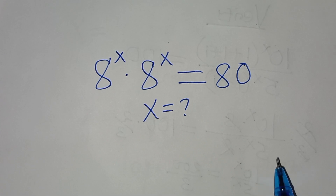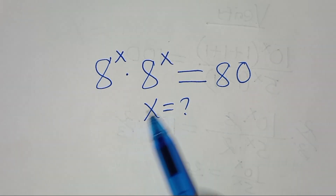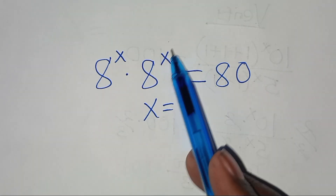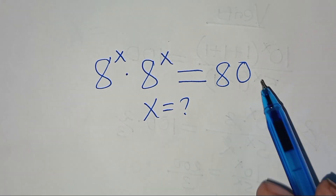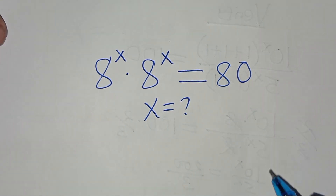Hello everyone, you're welcome to solve this nice exponential equation which is 8 to the power x times 8 to the power x. This is equal to 80. What is the value of x?